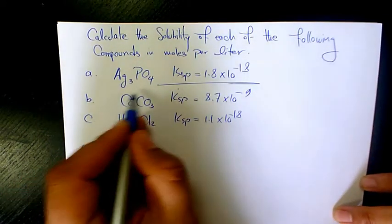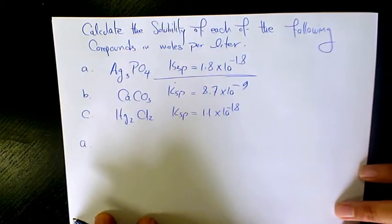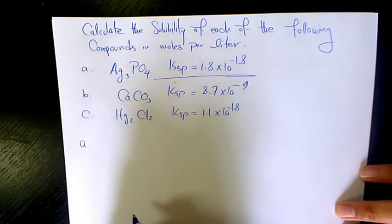First one is Ag3PO4, which is silver phosphate, and the KSP is 1.8 times 10 to the power of negative 18.